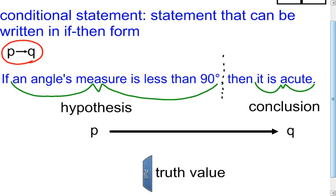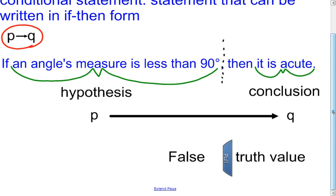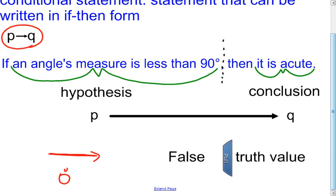If the statement is true, I would not be able to come up with a counterexample. If it's false, I should be able to find one. In this case, the truth value is false. I can come up with an angle that's less than 90 degrees but is not acute — specifically, a zero degree angle, where both sides of the angle lie on top of each other. Zero degrees satisfies the hypothesis since it is less than 90 degrees, but an acute angle must be strictly between zero and 90 degrees, not including zero. So zero degrees is less than 90 but is not acute — making this a false conditional statement.